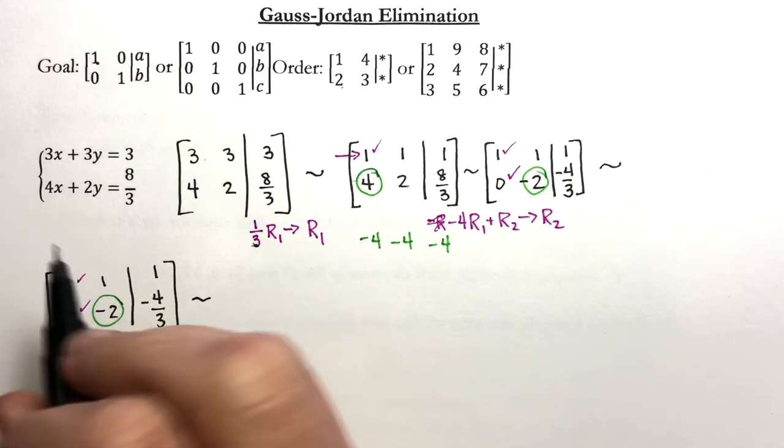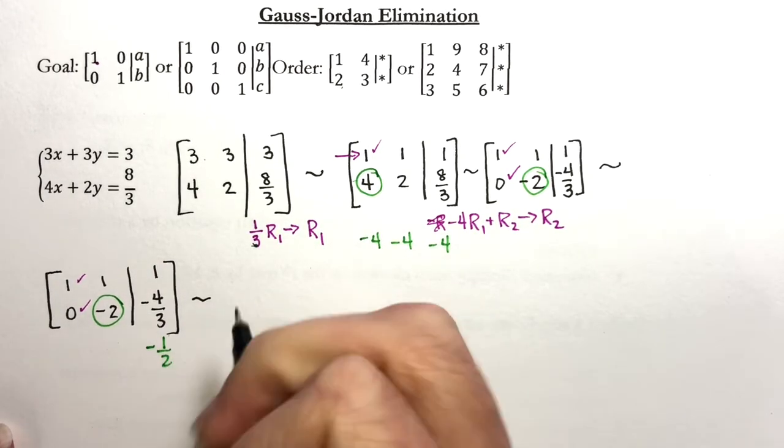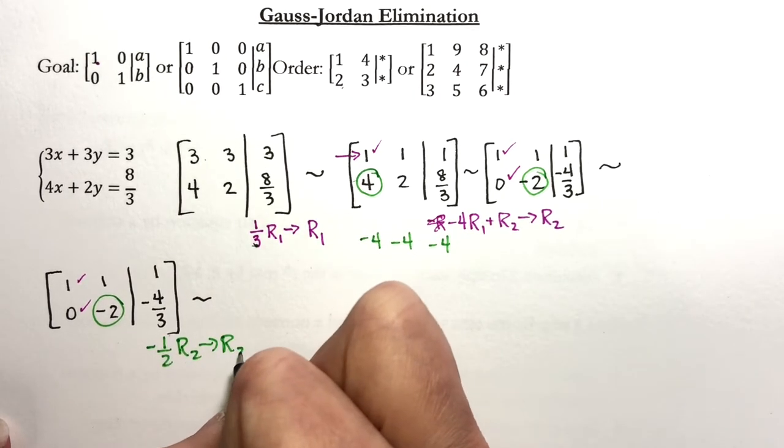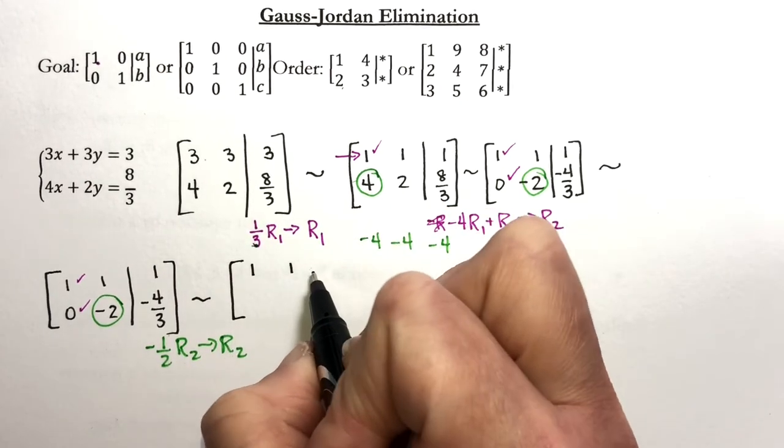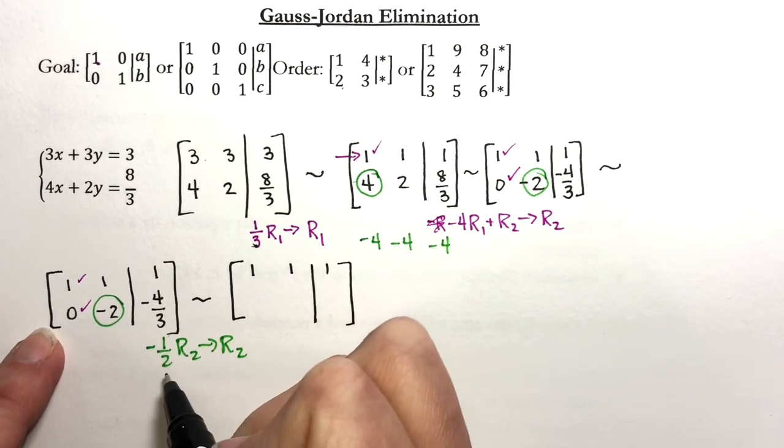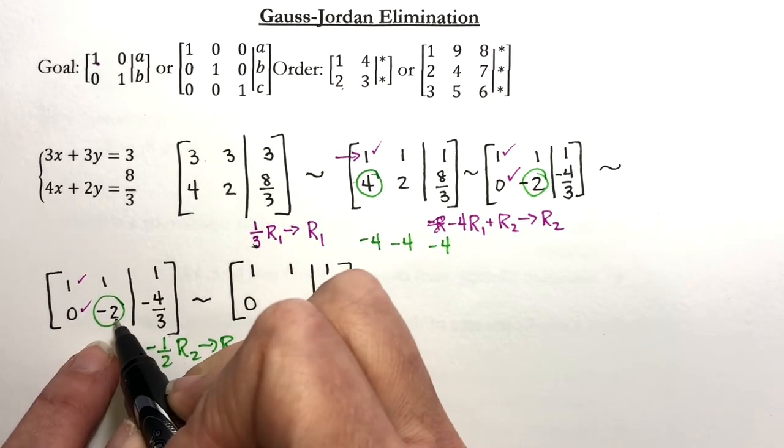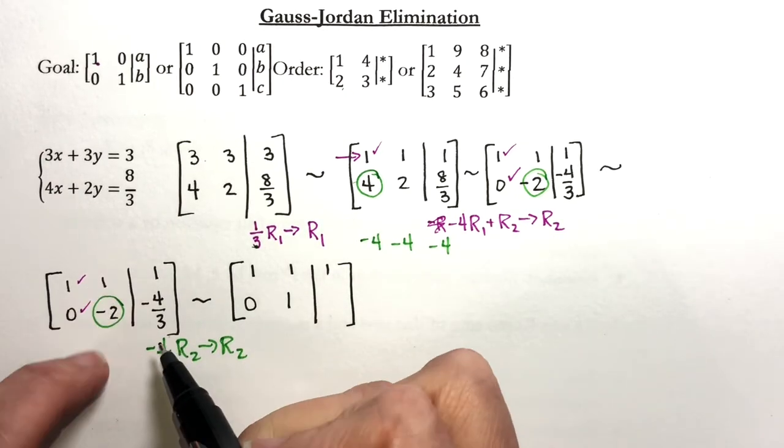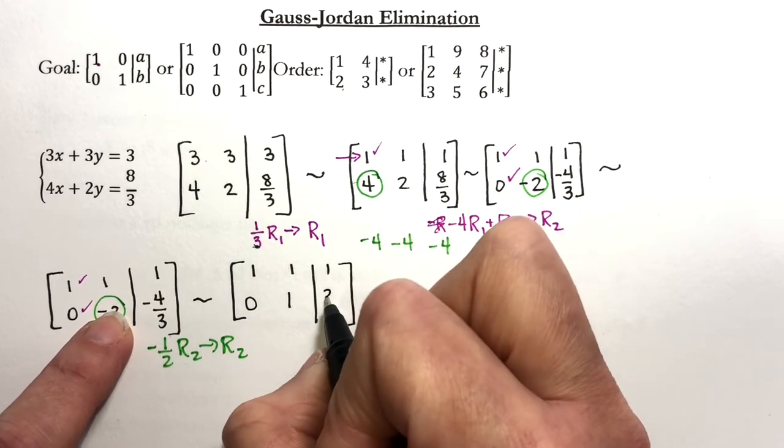The reciprocal of negative two is negative one half. And I'm going to replace row two with that. Row one is staying the same. Negative one half times row two: negative one half times zero is zero. Negative one half times negative two is one, which is what I wanted. And then negative one half times negative four thirds is going to give me positive two thirds.